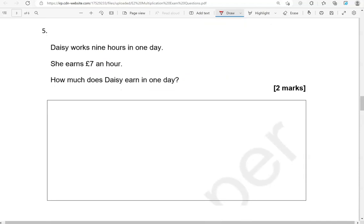Daisy works 9 hours in 1 day. She earns 7 pounds an hour. How much does Daisy earn in 1 day? So that is 9 times 7 or 7 times 9. Okay. So you can go through adding them one by one if you like.